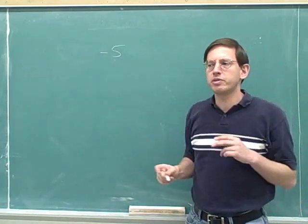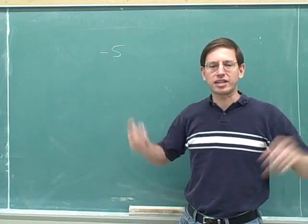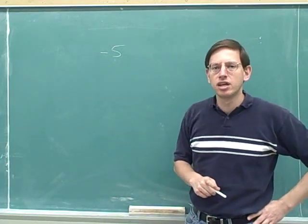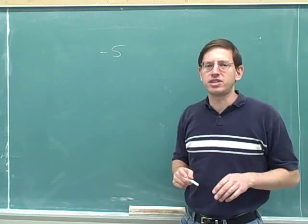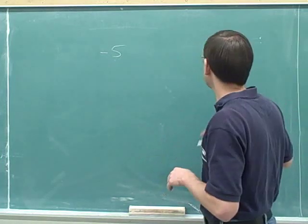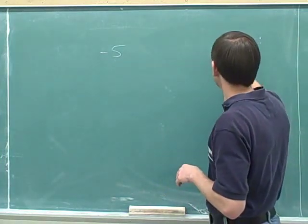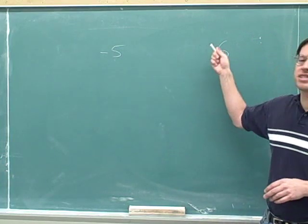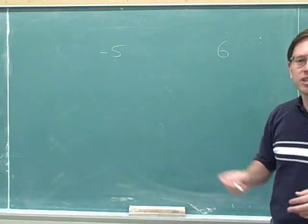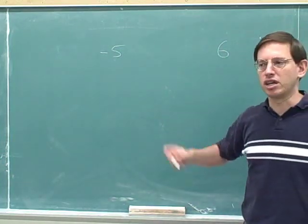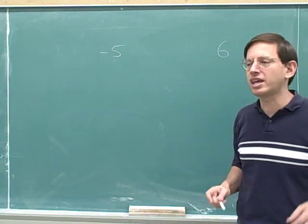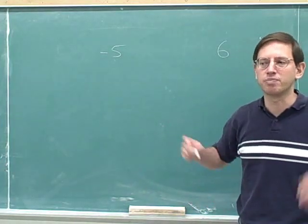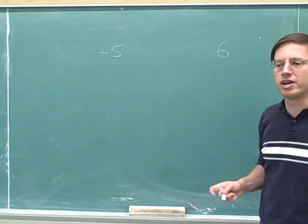Now suppose I told you I was thinking about the number positive 6. How would you write the number positive 6? Well, in normal life, the way you would usually write positive 6 is without any sign. You would still know it's positive because that's the convention in ordinary mathematics — if you don't indicate a sign on a number, the convention is that it's automatically positive.